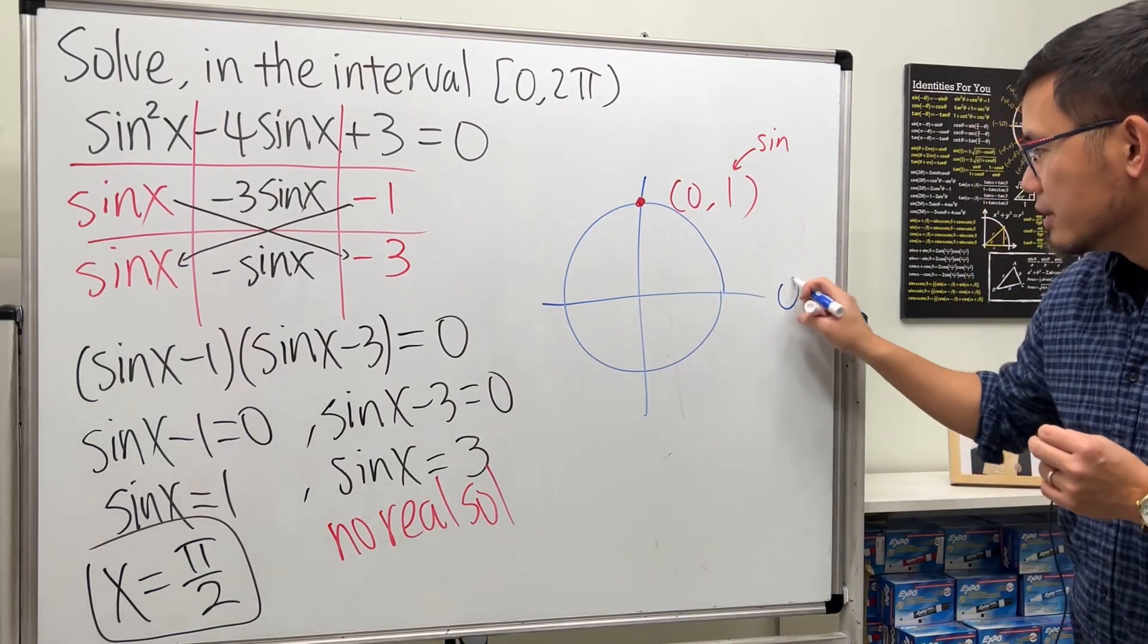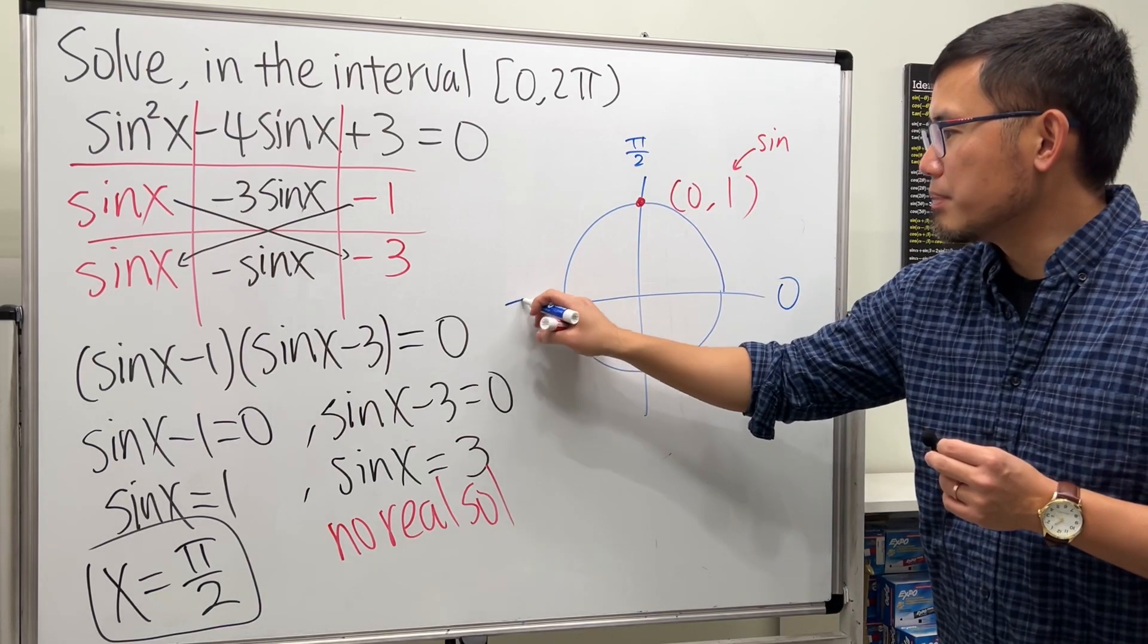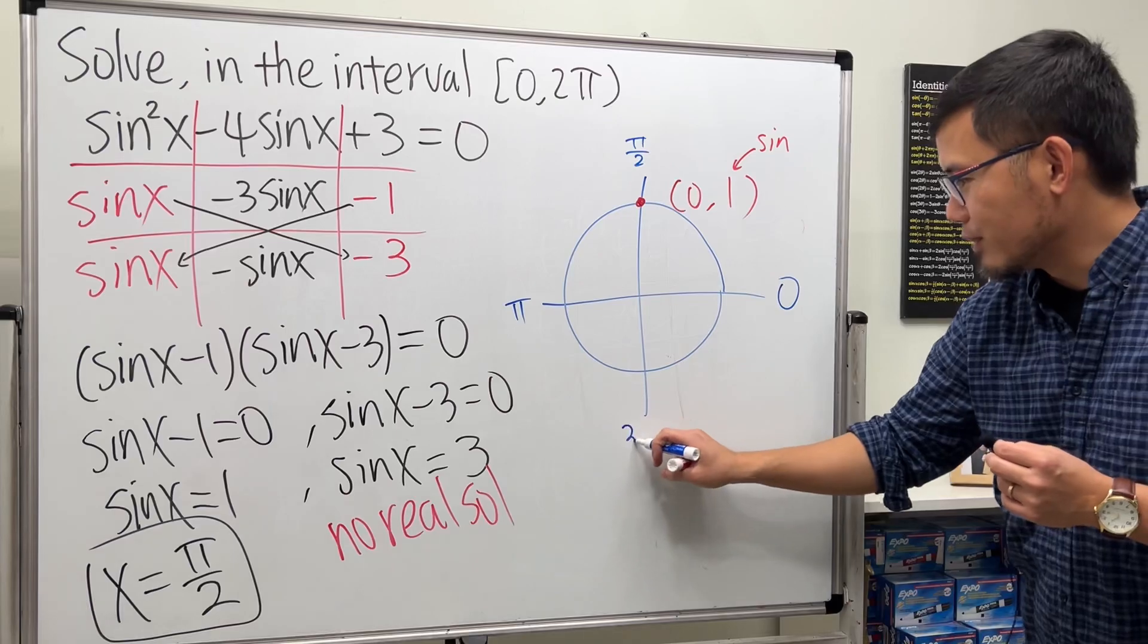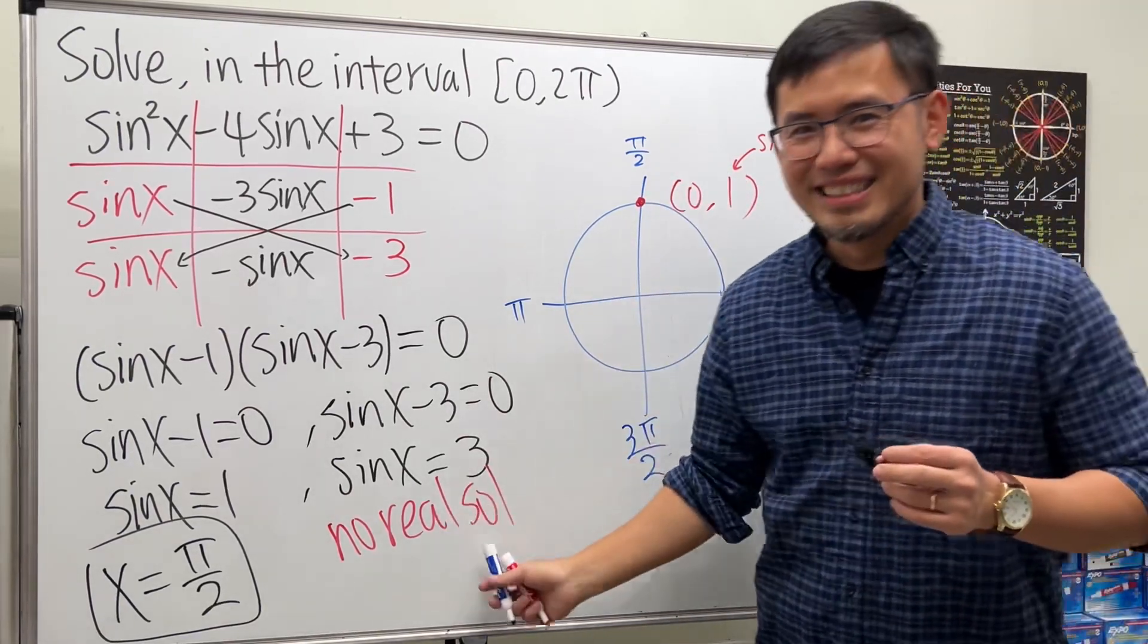And you know this right here is 0, this right here is pi over 2 which is 90 degrees, and this right here is pi, and this right here is 3 pi over 2. Anyway, pi over 2 is the answer. That's it.